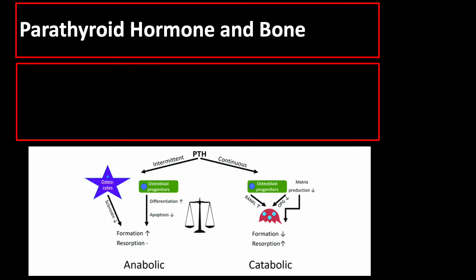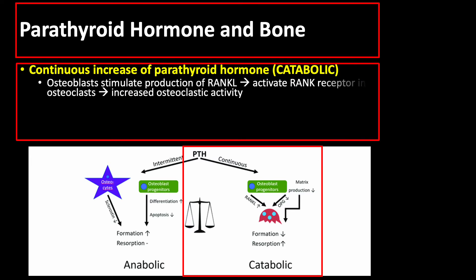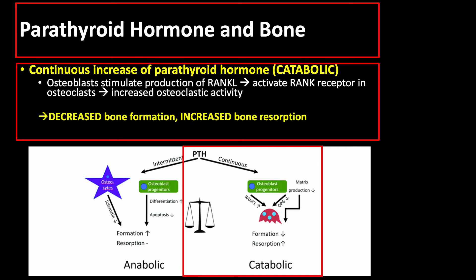On the other hand, if the parathyroid hormone is increased continuously, then the effect is catabolic or bone resorption. In catabolic effect, the osteoblasts stimulate production of receptor activator of nuclear factor kappa-B ligand. This ligand activates the RANK receptor in the osteoclasts, resulting in increased osteoclastic activity. Hence, there is decreased bone formation but increased bone resorption, resulting in increased blood calcium and phosphorus level.